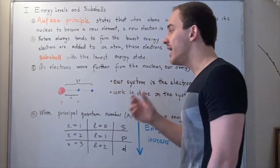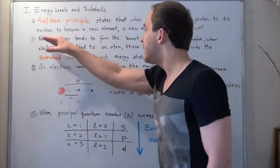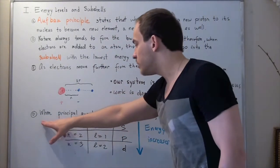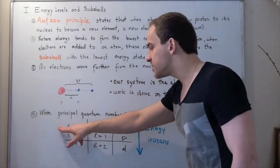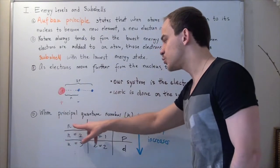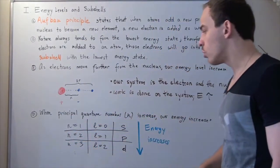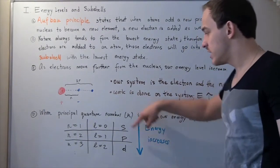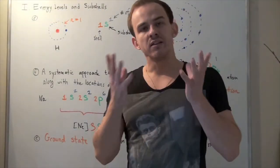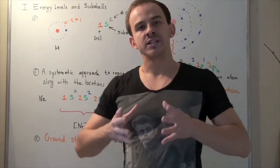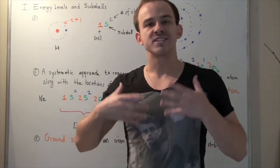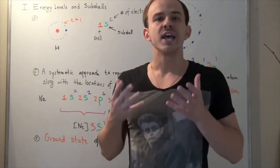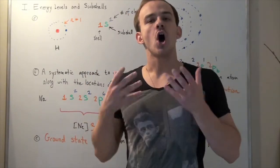Placing electrons further away increases the energy of our system, and nature tends to take the lowest energy state. That's exactly why, when we look at the principal quantum numbers, as they increase from n=1 to n=2 to n=3, or from orbitals s to p to d, our energy increases as we go down this table. So now let's talk about electron configuration. Electron configuration is simply a systematic approach to representing and showing exactly where our electrons are placed within any given atom — in which shells or sub-shells our electrons are found.